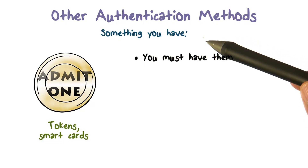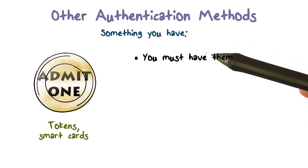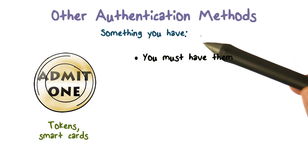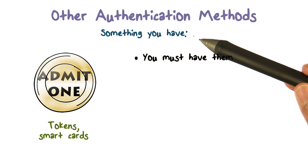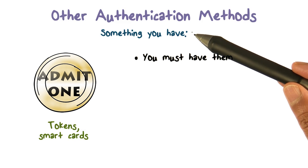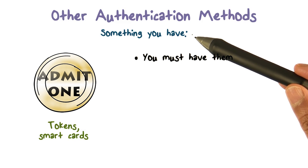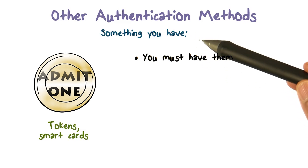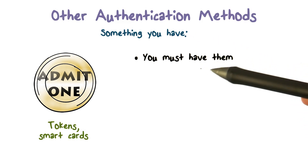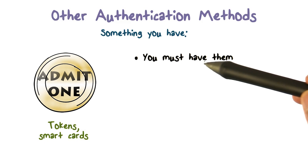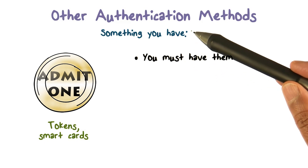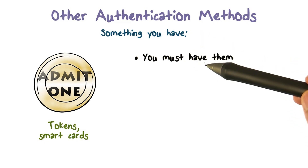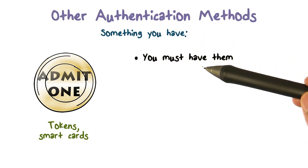Since passwords have problems, and that's only one of the ways in which you can do authentication, let's look at some of the other ways in which authentication can be done. The second one was something you have — a token, a smart card, or something like that.